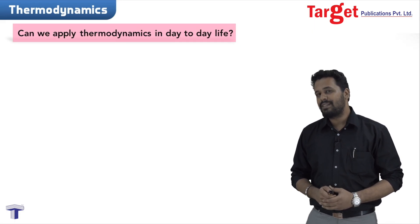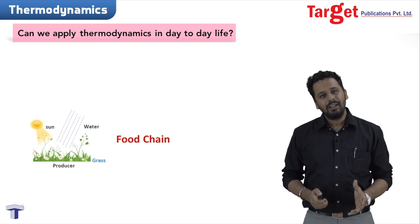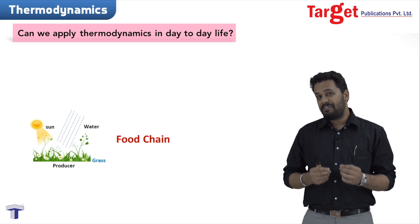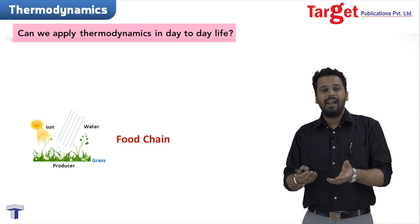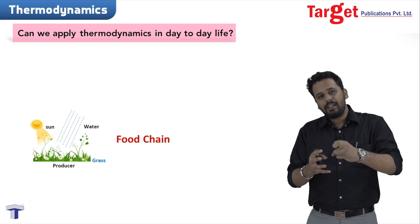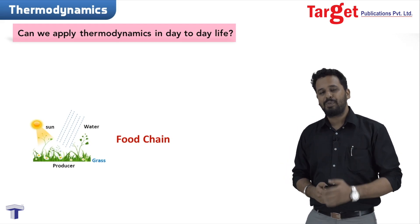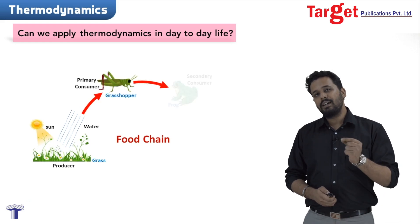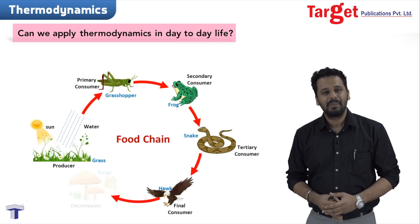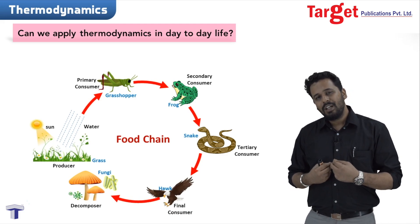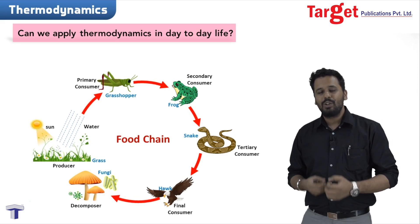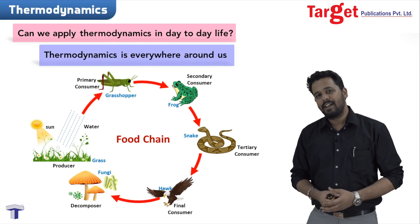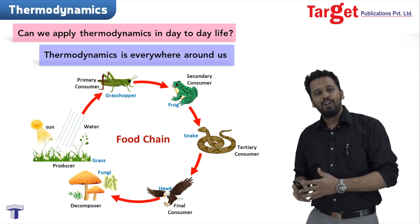Another very common example can be seen in the food chain, where the sun is shining out its energy into the universe every single second. A very tiny fraction of this energy lands on the earth, where plants use sunlight and store its energy through the process of photosynthesis. This energy is then transferred to higher order consumers one after the other. So when we eat food, we are essentially doing some transfer of energy, which again is an example of thermodynamics.